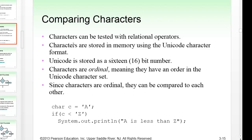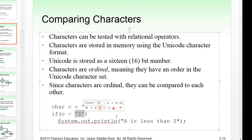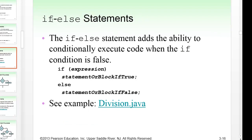You can also test characters with relational operators. Characters are stored in memory using the Unicode character format as 16-bit numbers. Since characters are ordinal — they have an order in the Unicode system — they can be compared to each other. For example: char c = 'a'; if c < 'z', print 'a is less than z.' This works because character values have a numeric ordering.